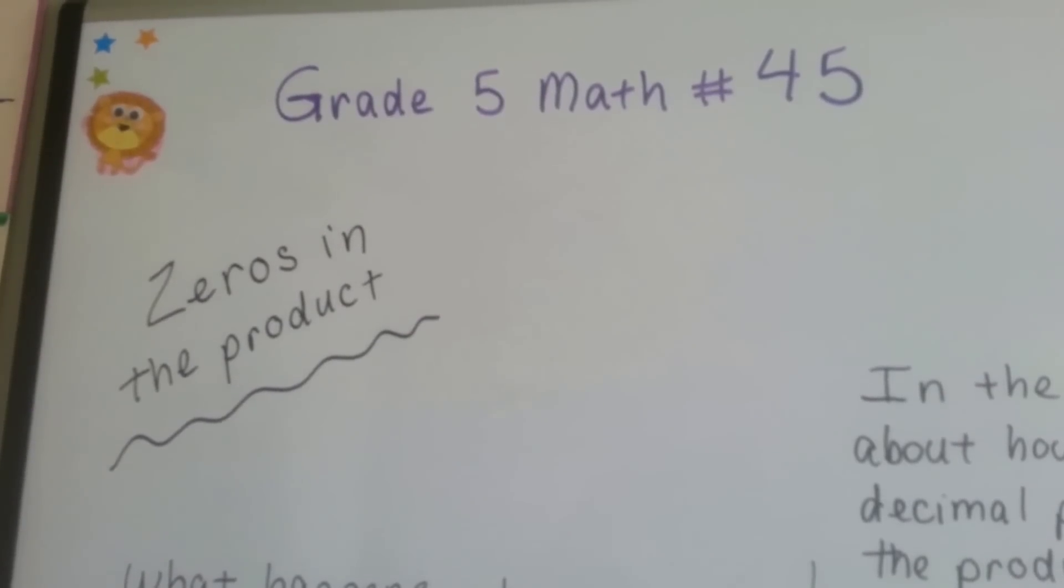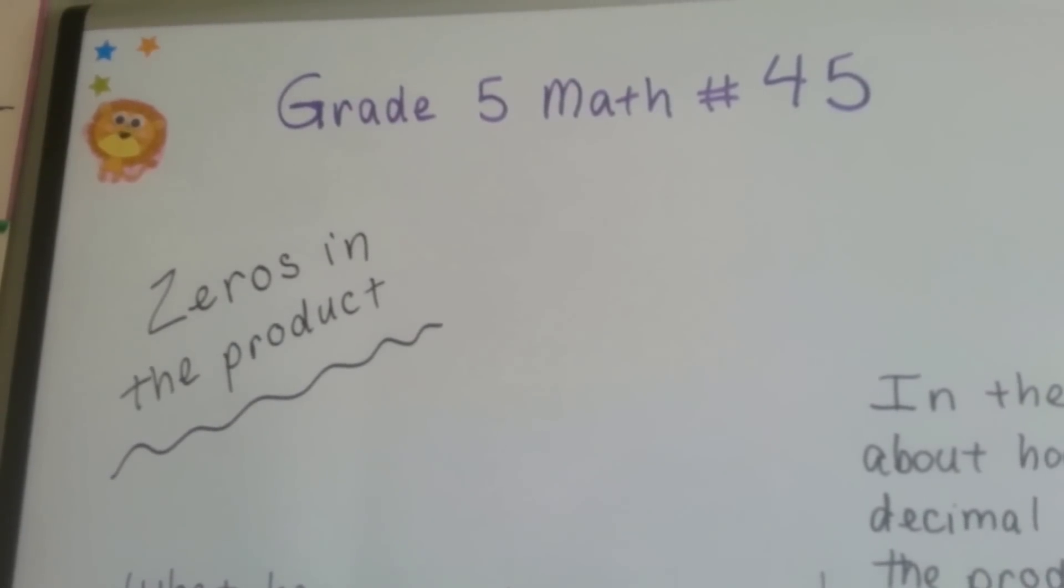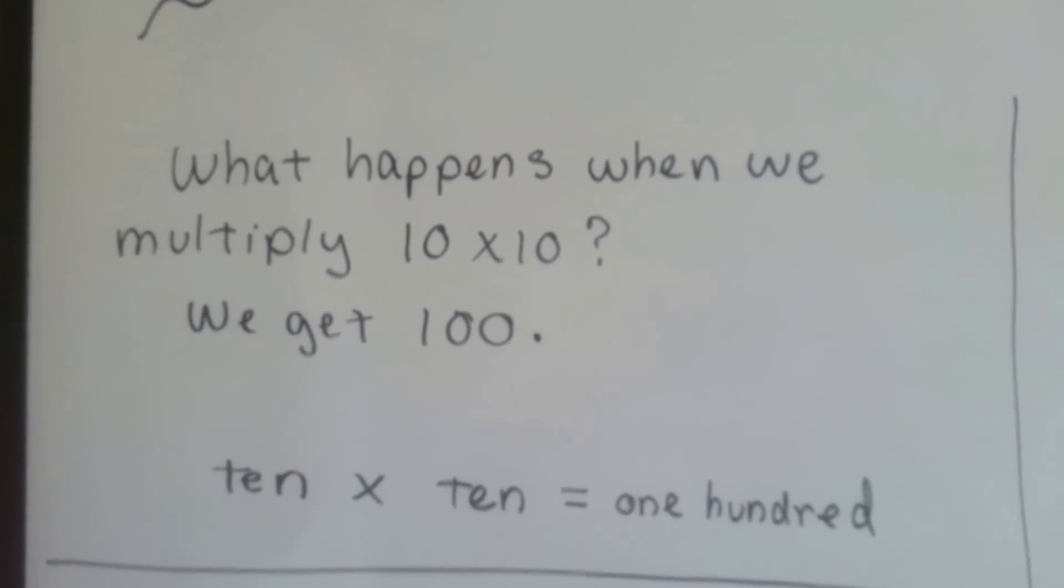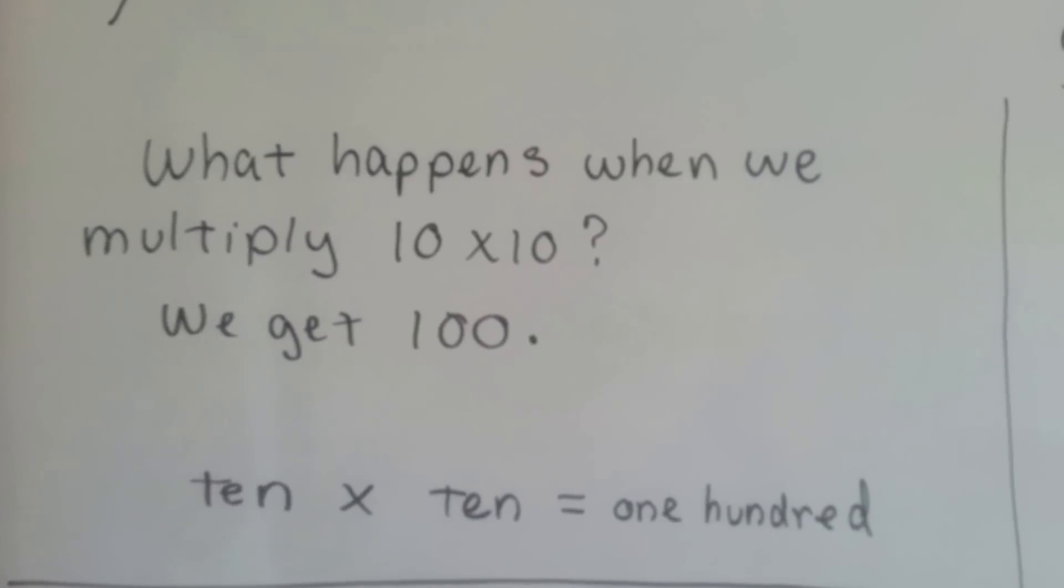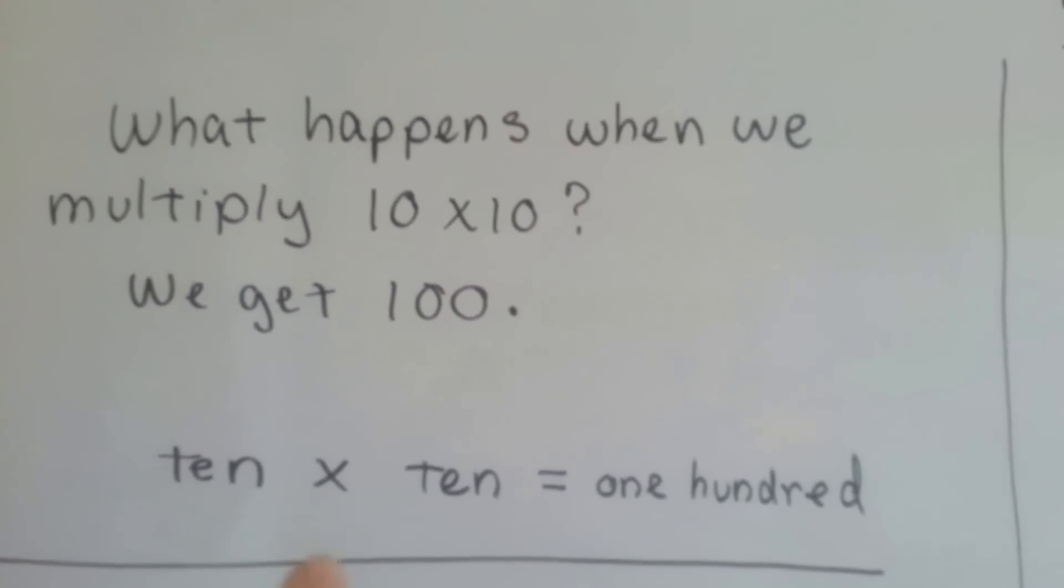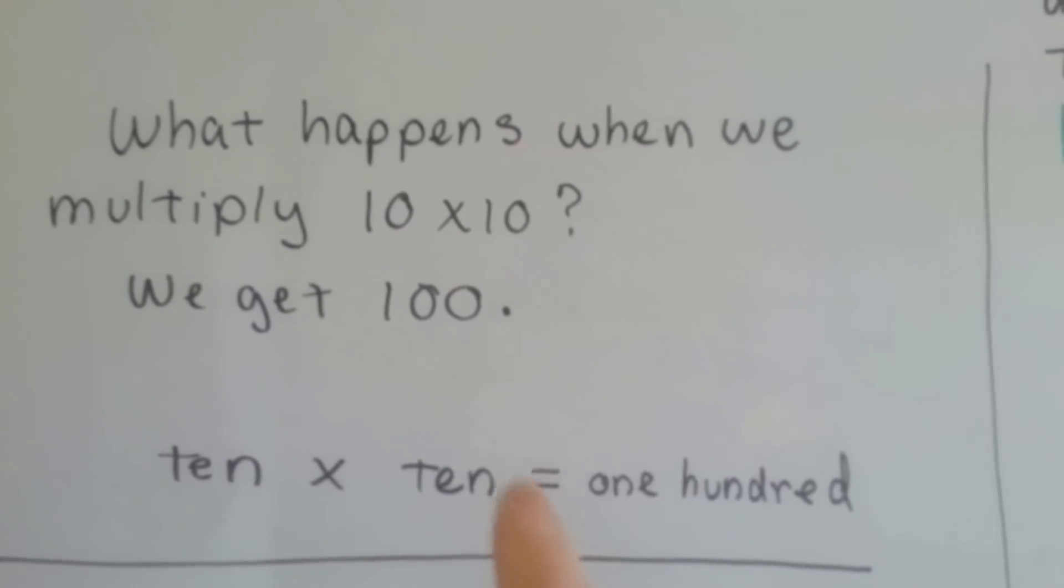Grade 5 math number 45, zeros in the product. What happens when we multiply 10 times 10? We get 100, right? If we wrote it out, we could say 10 times 10 equals 100.